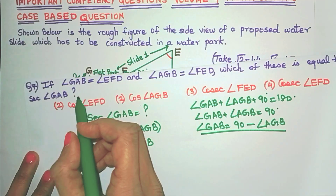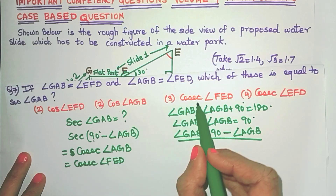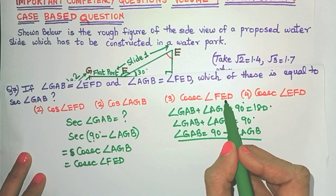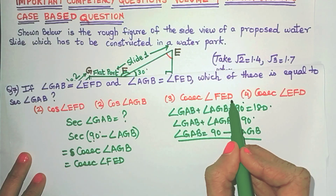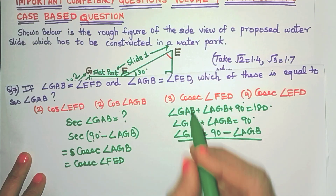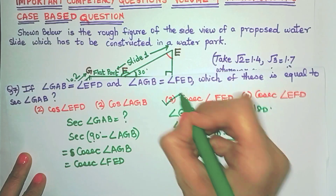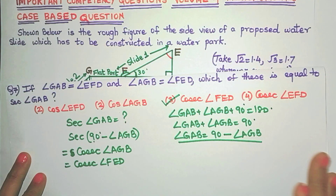Cosec(FED) is one of the options — that means option number three is the correct answer.